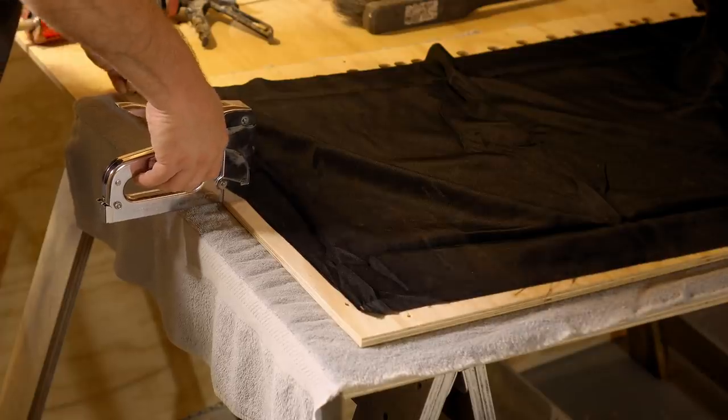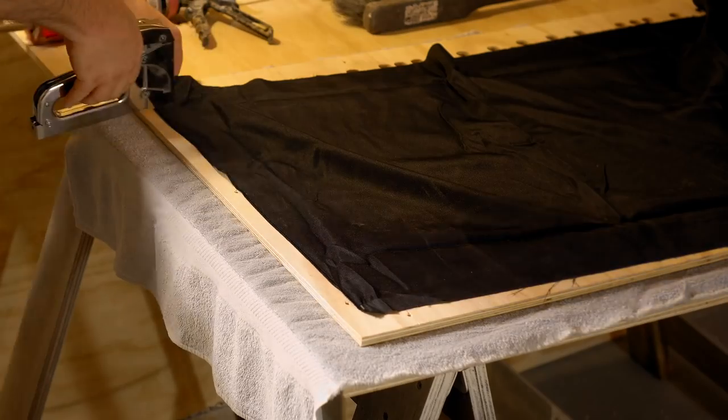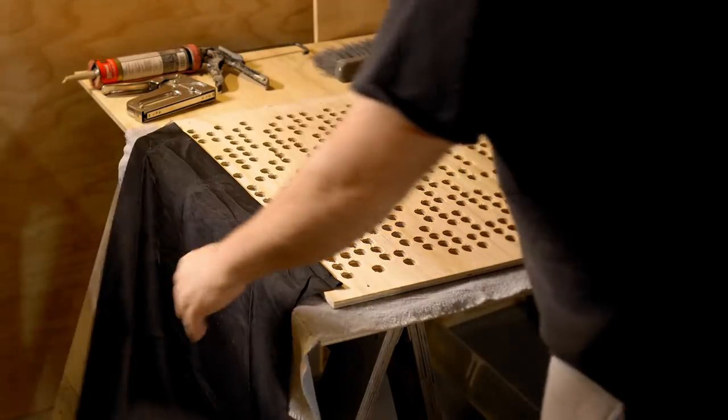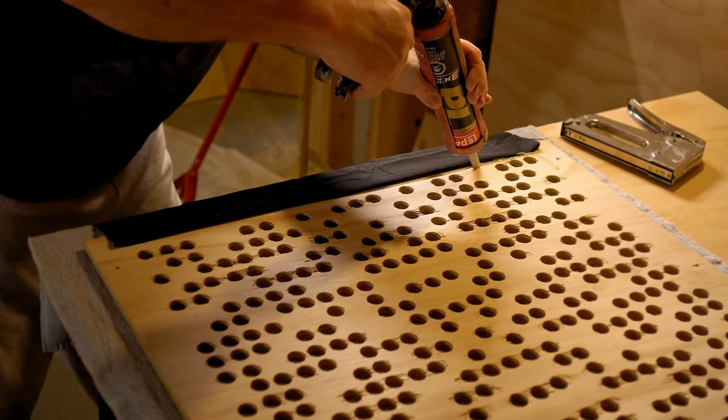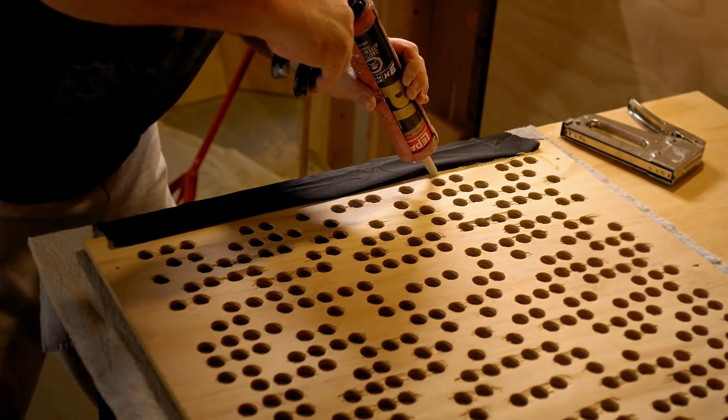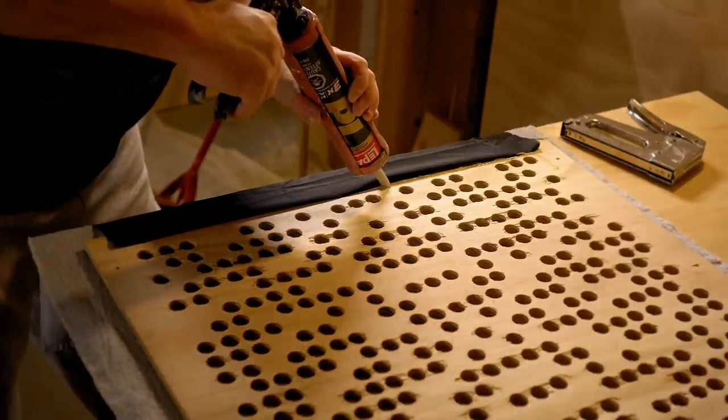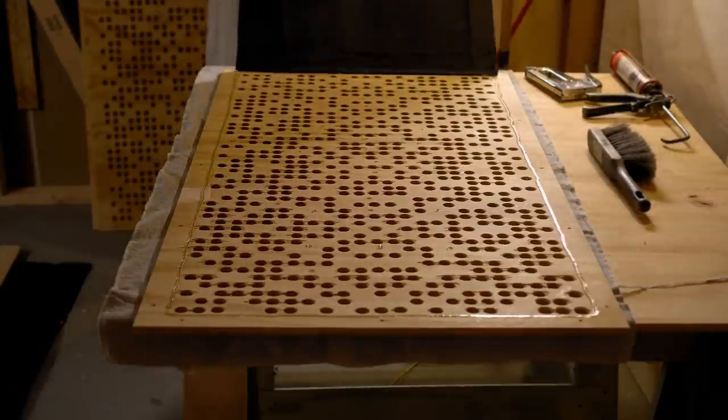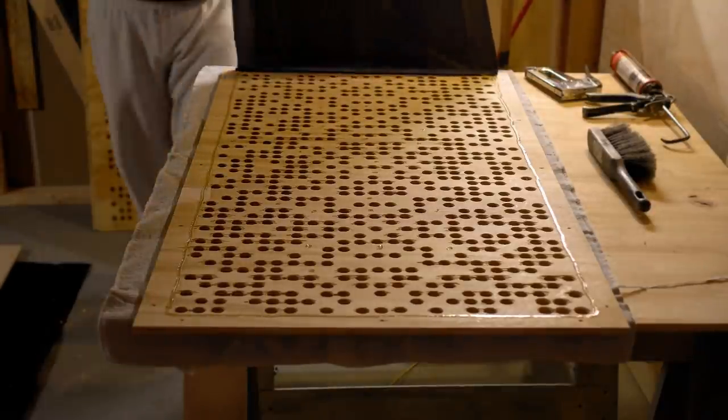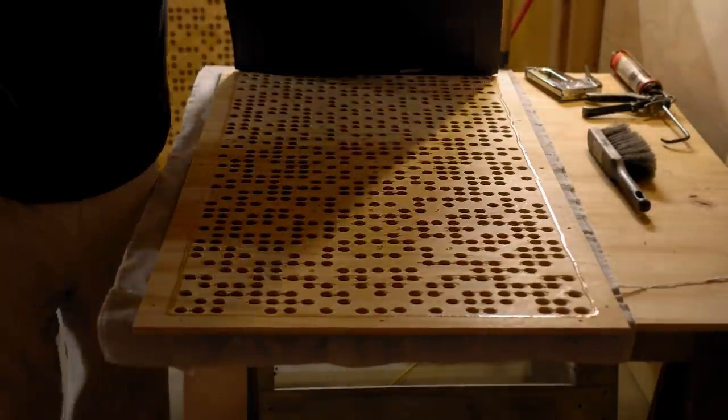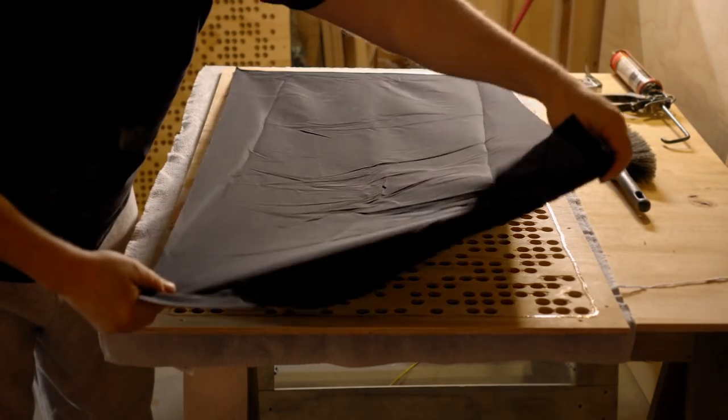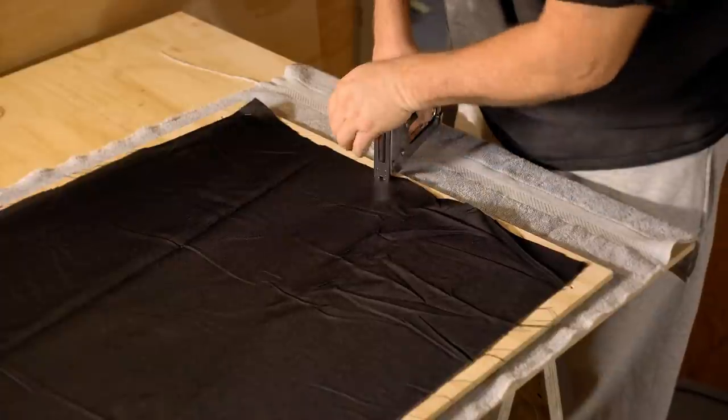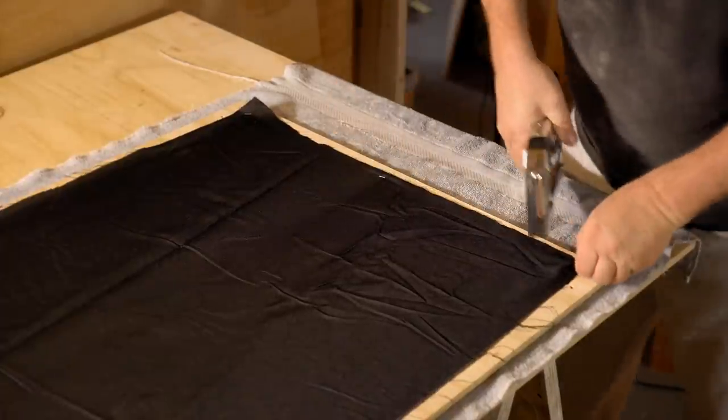I let the polyurethane dry overnight and now I can get the cloth put on the back. What the cloth does is it keeps the fiberglass inside and it also blacks out the holes so they actually look better. And to fasten that I'm using polyurethane construction adhesive and I'm also using staples to hold that in place until the glue dries. You don't have to worry about pulling this super tight to get rid of wrinkles because you won't be able to see those wrinkles after the panels are installed.